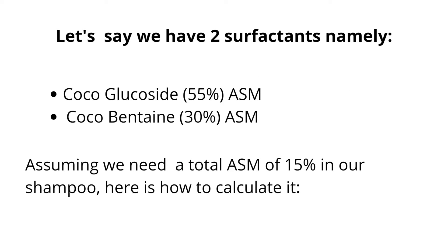When formulating a shampoo, you usually need about 10 to 15 percent of the actives in the shampoo. This can be tricky to calculate because the surfactant you have is not 100% surfactant. If it were 100% surfactant you could simply calculate your total surfactant amount directly. But since your surfactant is made up of different percentages of actives, we have to calculate the percentage of actives for each surfactant. In a basic sample formulation we need a total of about 15% ASM.